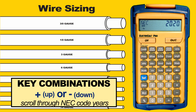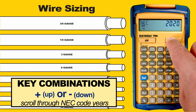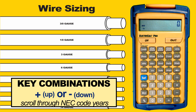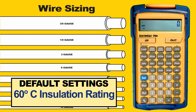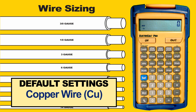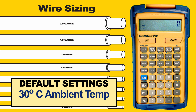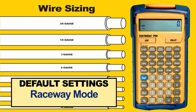We'll press the On/C button to clear the screen, but all the settings will remain in place. On the left side of the display we can also see some additional default settings, which are always displayed here. Three-phase is the default, as is a 60°C insulation rating and copper wiring. Other defaults not indicated on the screen are ambient temperature at 30°C and raceway mode as opposed to free air mode, so we will be working off of Table 310-16.